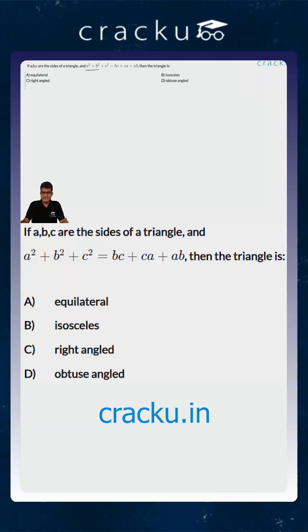In this question we are told that a, b and c are the sides of a triangle such that a² + b² + c² is equal to bc + ac + ab. Then the triangle is?